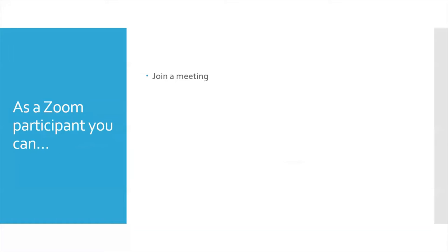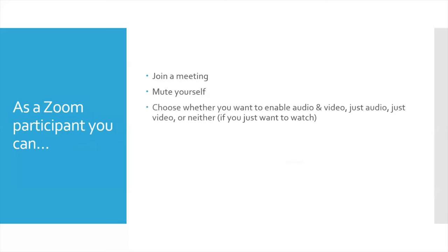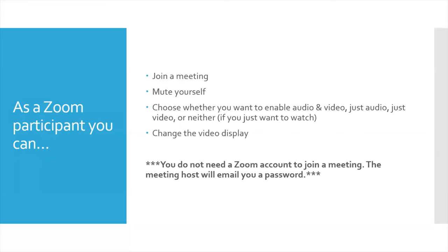As a participant, you can of course join a meeting, mute yourself if you want, and you can still choose whether you want to enable audio and video, just audio, just video, or neither if you just want to watch. Even as a participant, you don't need host approval to do that — you can just choose in what fashion or medium you want to participate in the meeting. An important note: you do not need a Zoom account to join a meeting. You just need the password from the host, go to zoom.com, click join meeting, put in that password, and voila — you're part of that meeting.